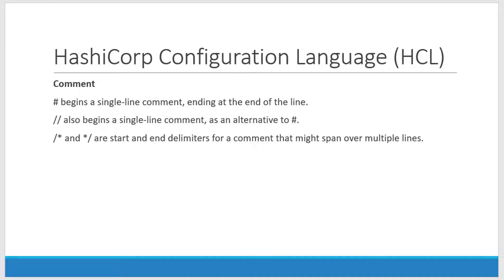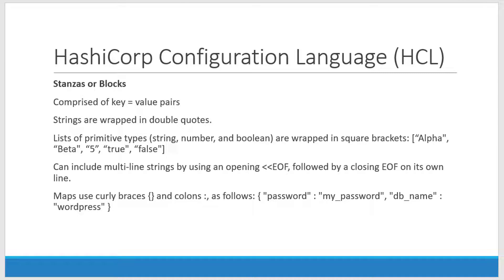For comments within HCL, they start with a hash or double slash. If I have a multi-line comment, I can use the comment starting as slash-star and close it with star-slash. A stanza or block is going to have a collection of key-value pairs, and all strings within the stanza will be wrapped in double quotes. It can have any number of primitive types like strings, numbers, and booleans, all wrapped with double quotes. If it is a list, I can have a collection of primitive types enclosed in square brackets. For multi-line strings, I can use the EOF starting and closing markers.